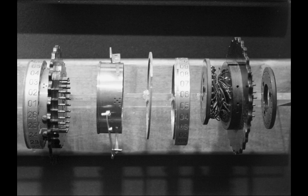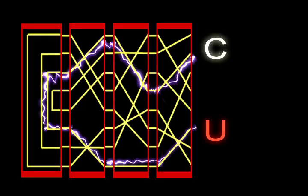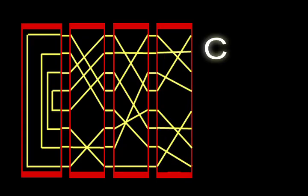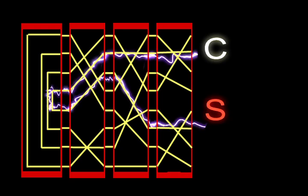So at each rotor position, there was an electrical path from every input letter to every output letter. When the rotor advanced, an entirely new path was defined for each letter.